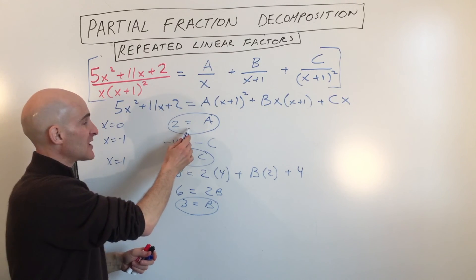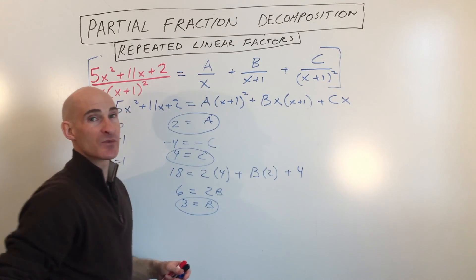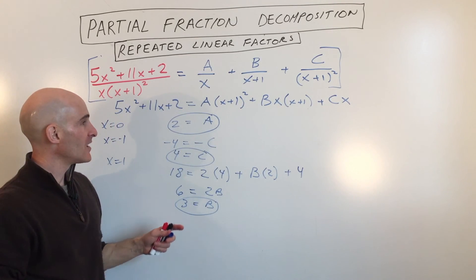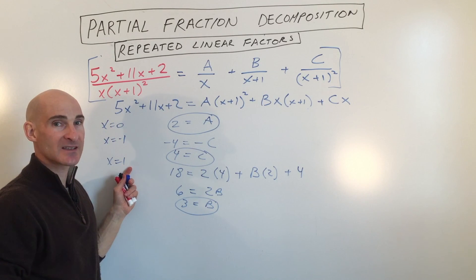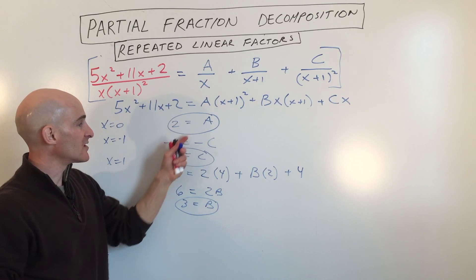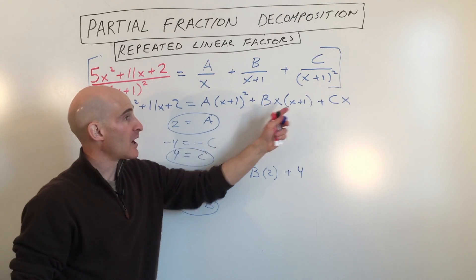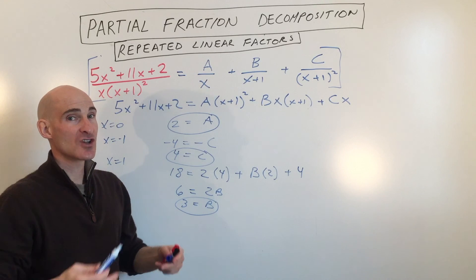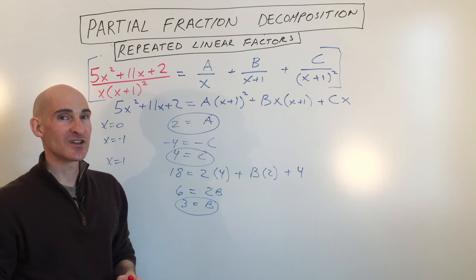So again, this is a good technique, you know, by picking certain values for x to cancel out some of the terms. But sometimes you'll get to the point where you'll have to just pick a value like we did here at the end. We substituted x equals 1 in, and we use the other values that we solve for already. Now if we had a couple other variables left over, we'd have to solve a system. And I can show you how that works in some of the other videos. So I'll see you in the next video.